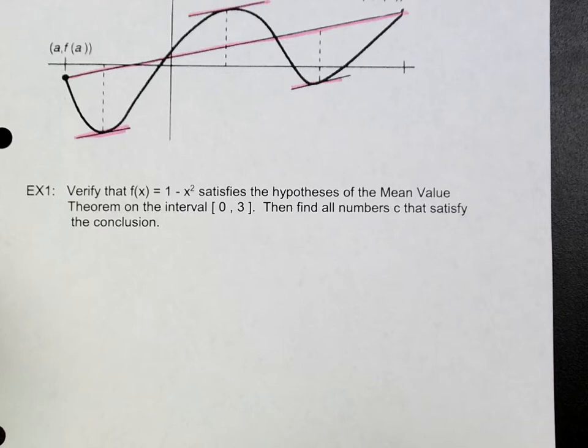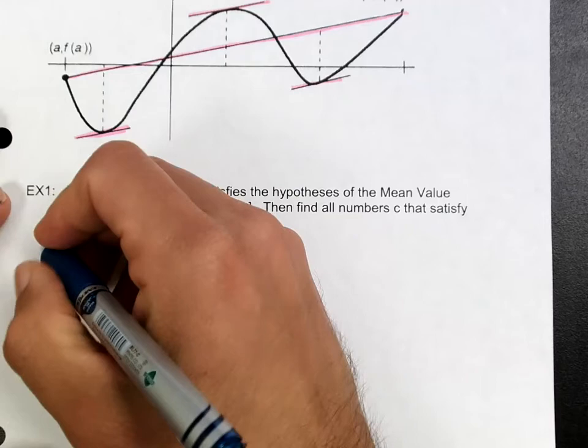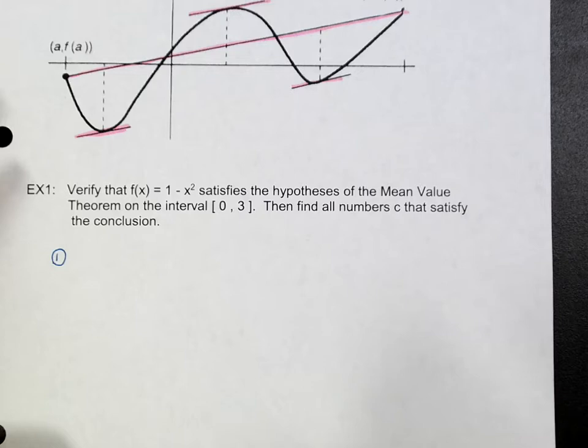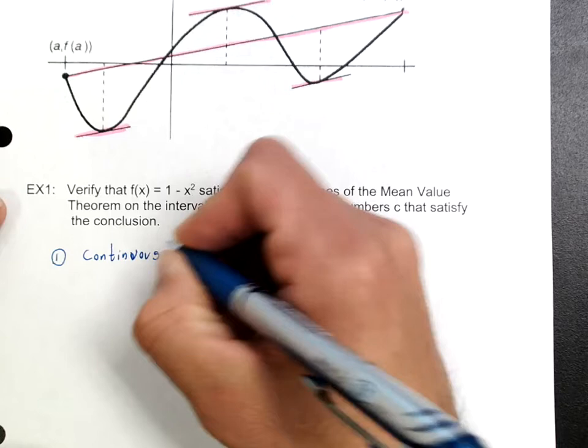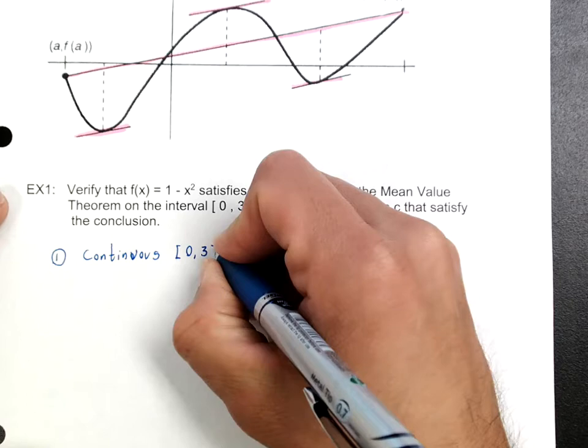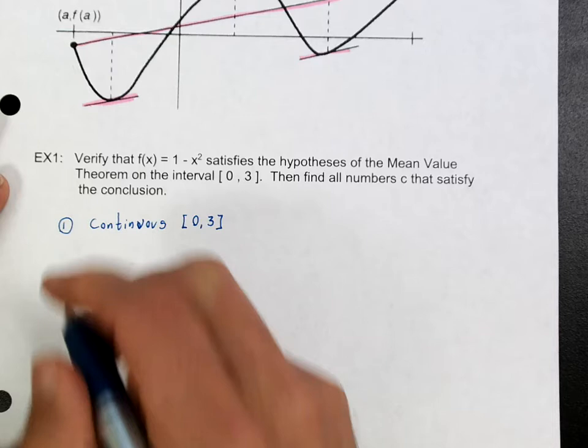The first thing we must do to figure out if this satisfies the hypotheses is to figure out if this is continuous. As you look at this — y minus x squared — you should know that it's a parabola. So it is going to be continuous in this interval, it's continuous everywhere, but it's definitely continuous within that interval.